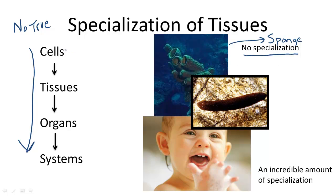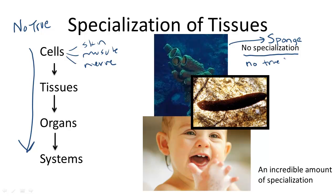An example of this is looking at different types of cells. There are skin cells, muscle cells, nerve cells, and so on. These are specialized because they have specific functions. In addition, the sponge also lacks specialized cells and has no true tissue, because these unspecialized cells do not link together in one working functional form.